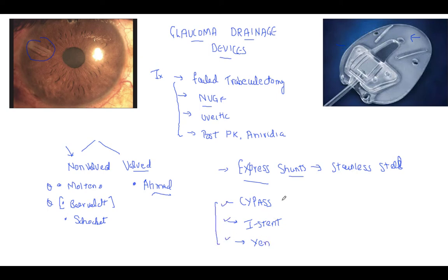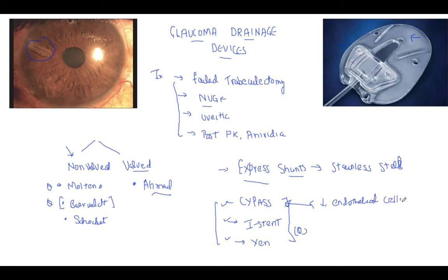These are some names important from the AIIMS point of view. A very recent question asked is: why is the CyPass shunt no longer used? Because it decreases the endothelial cells, so it was removed from the market. These are some important new points to remember regarding glaucoma drainage devices.